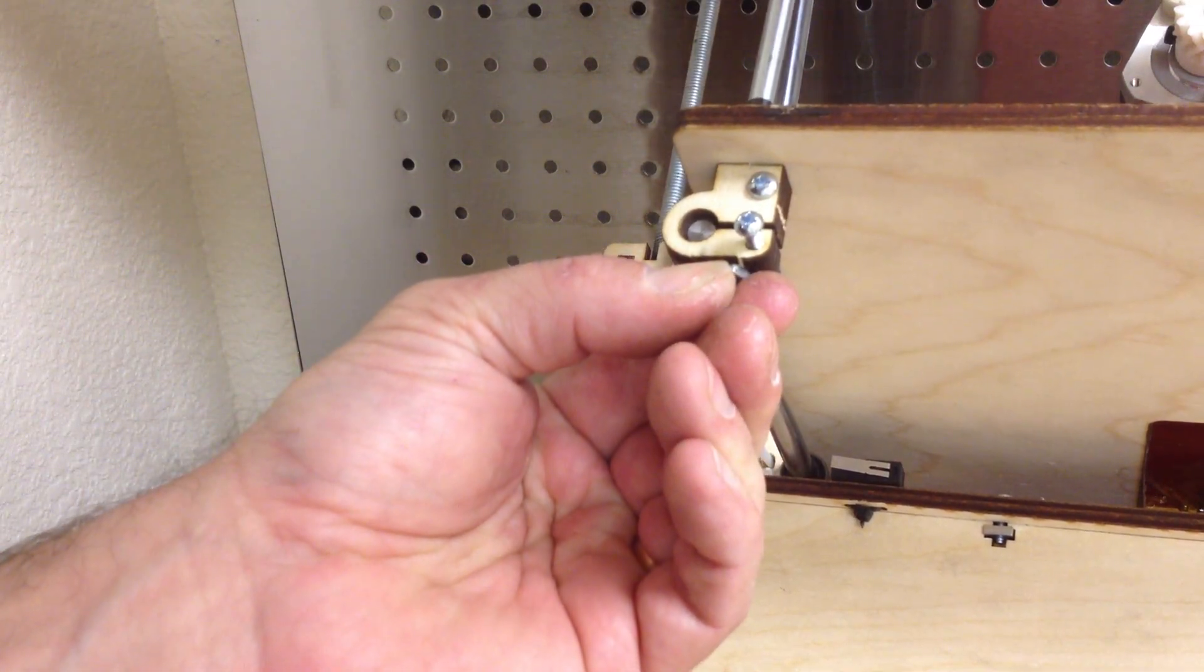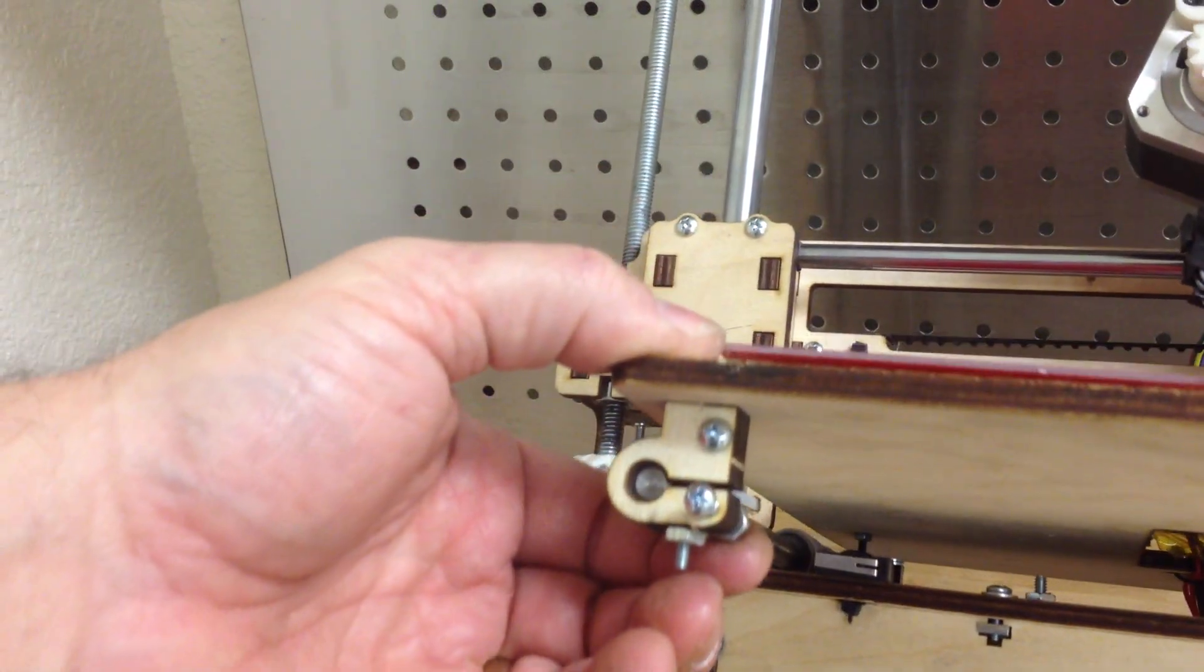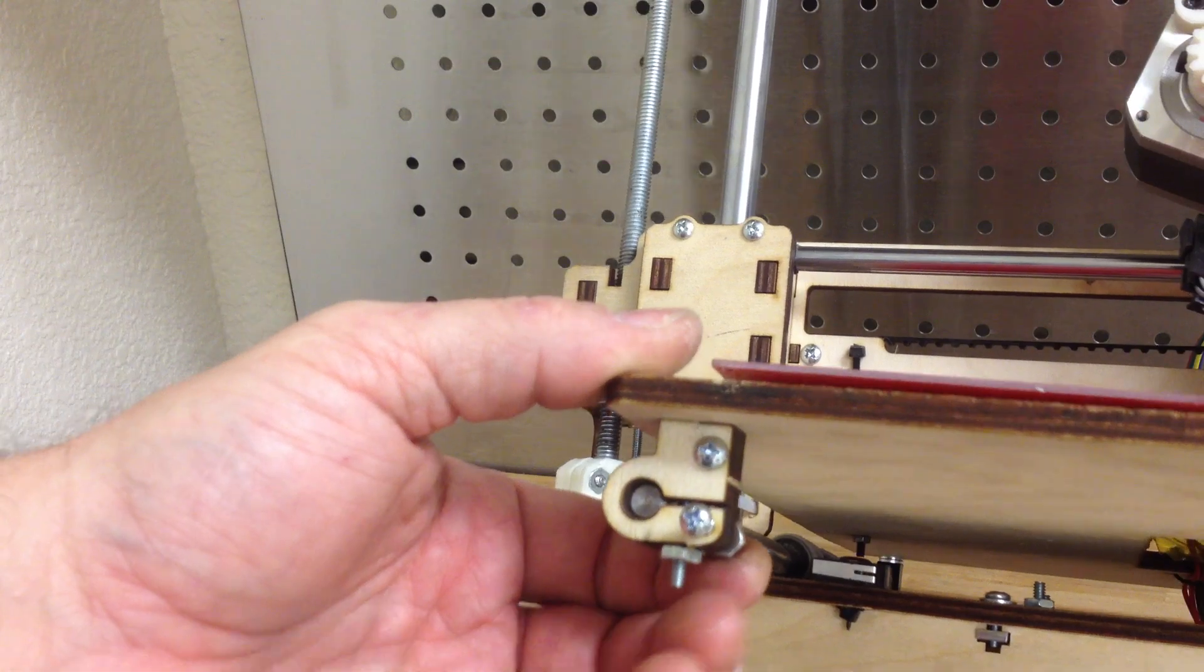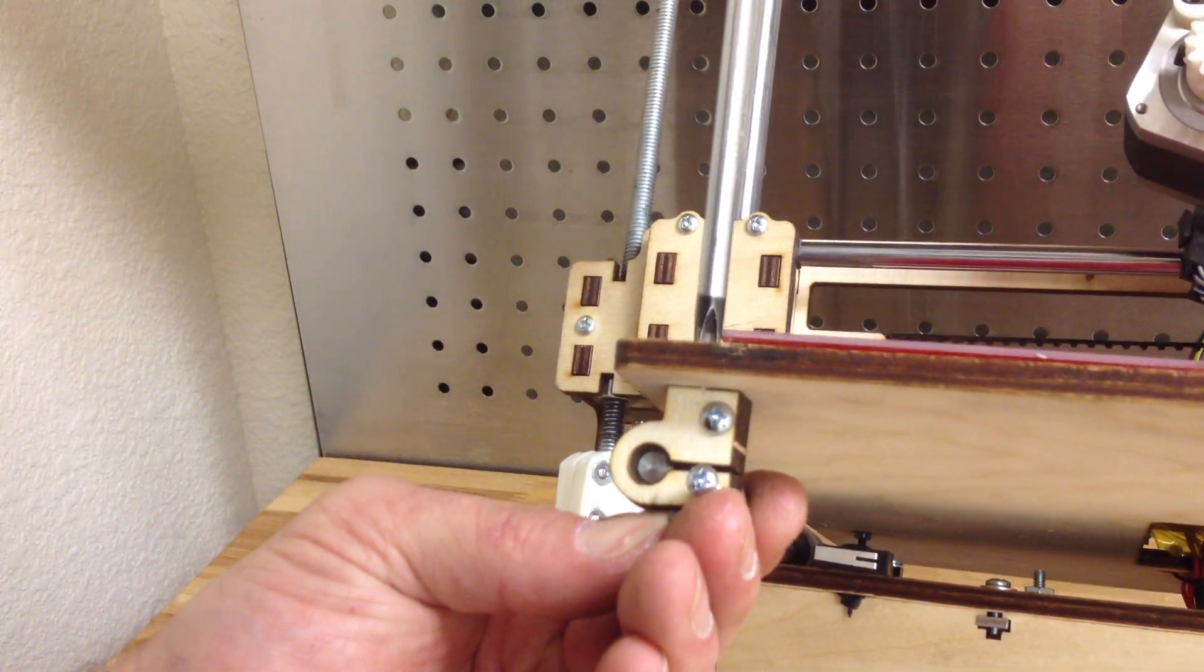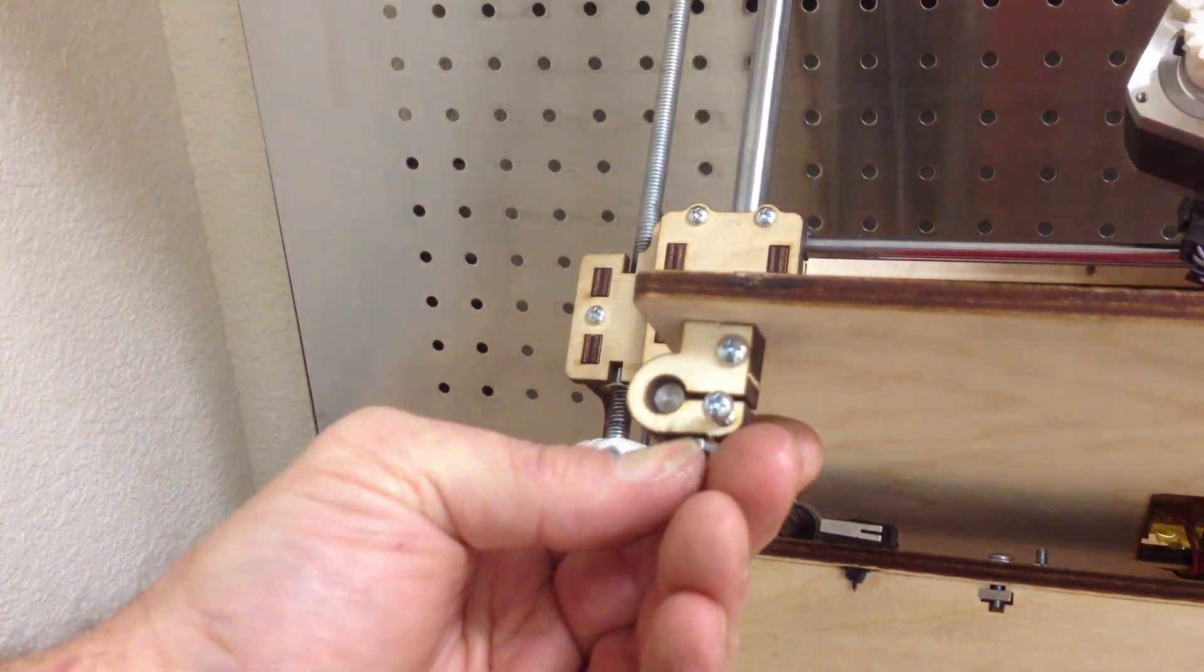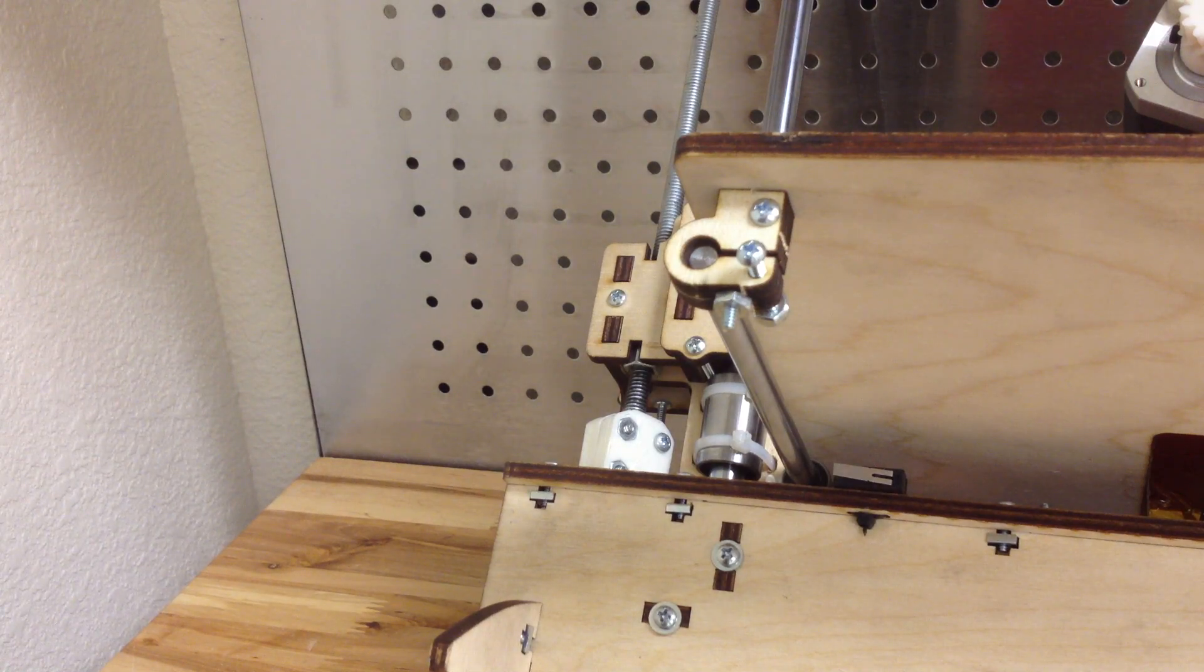I'm going to tighten that until I see this gap right here start to, this gap that goes across, start to compress. Then I know it's getting a good grip on that bar. And I will do that at every corner. And we'll have our upgraded Y-bar ends.